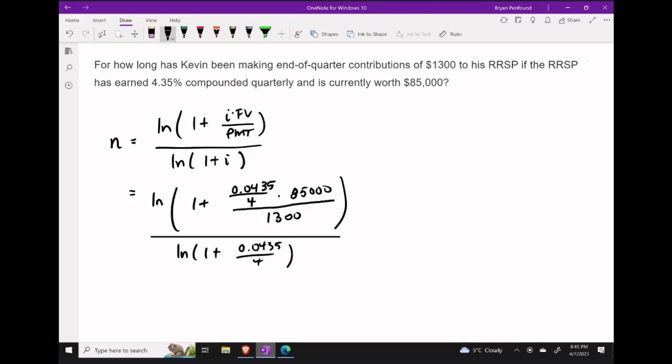Let's go ahead and start making some substitutions into our formula. Noting that $85,000 is going to be our future value or FV, we also have inside of that uppermost bracket the $1,300 going in for our payment size and 4.35% compounded quarterly going in for i.